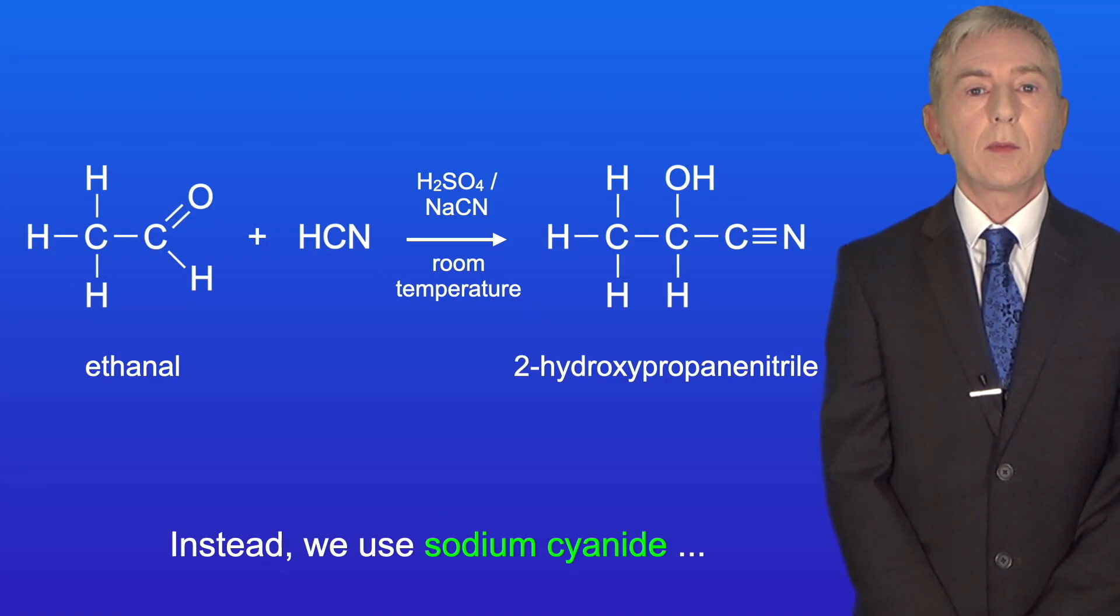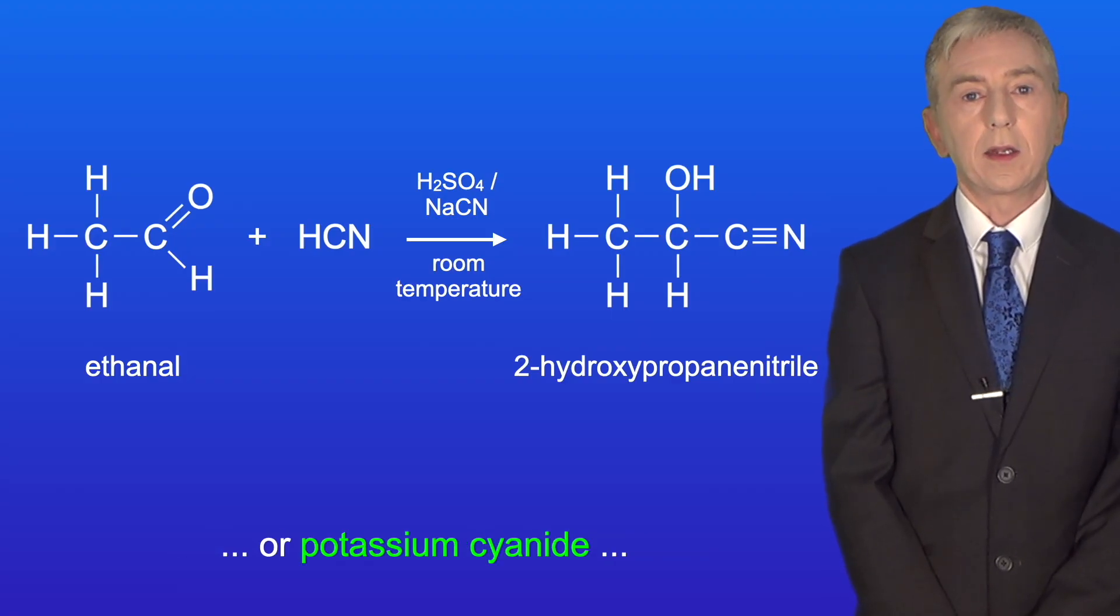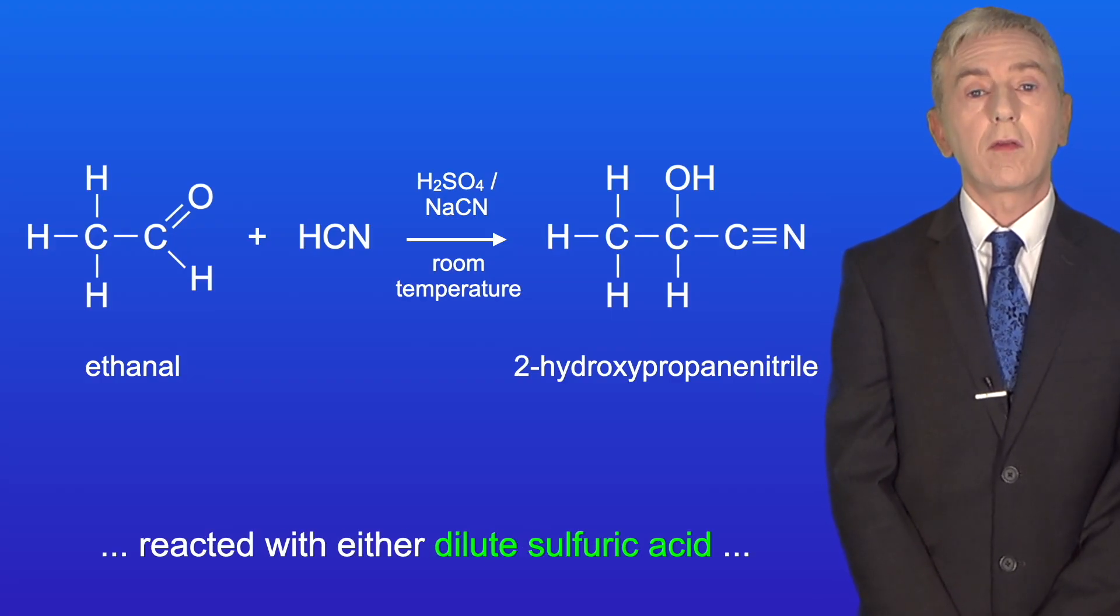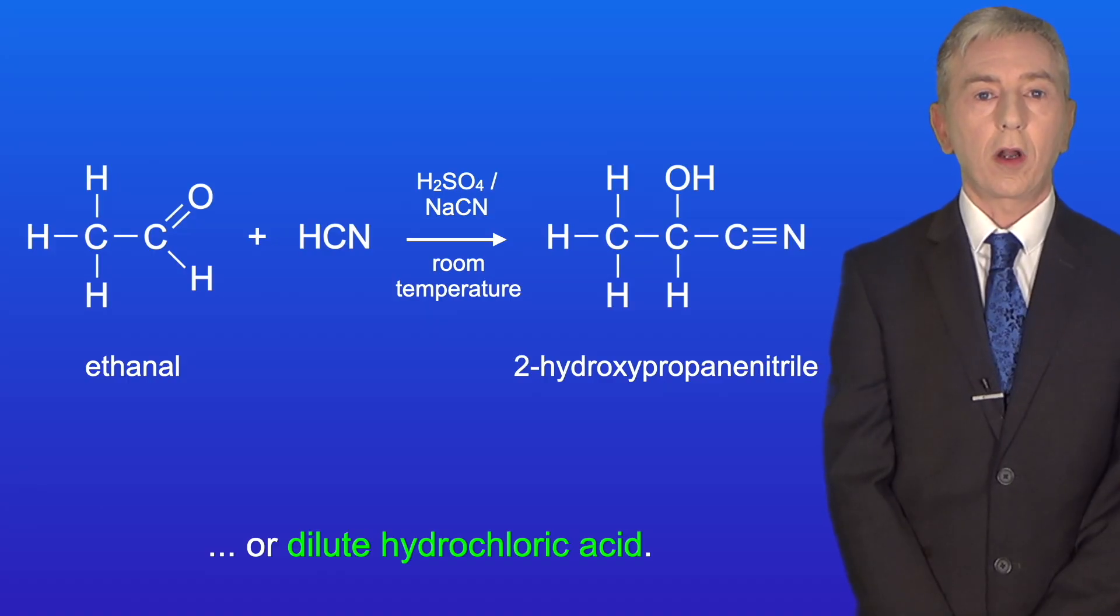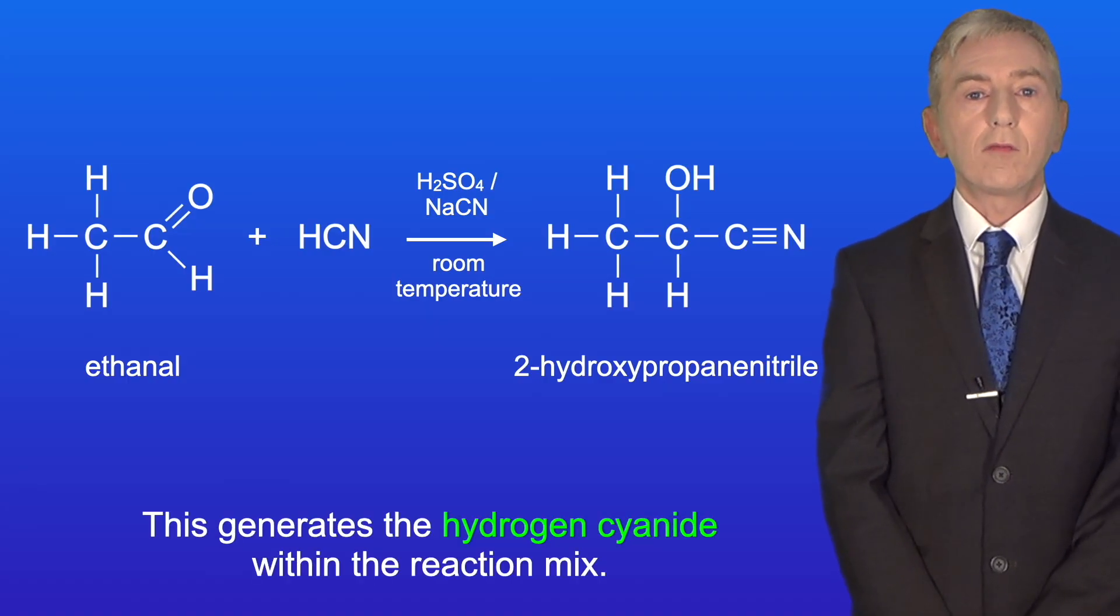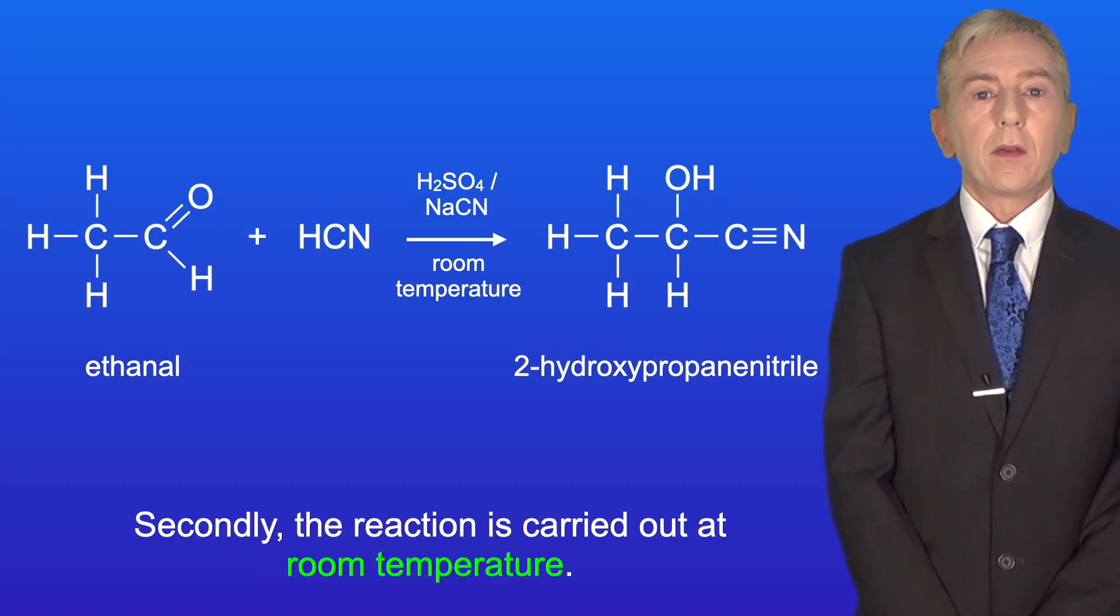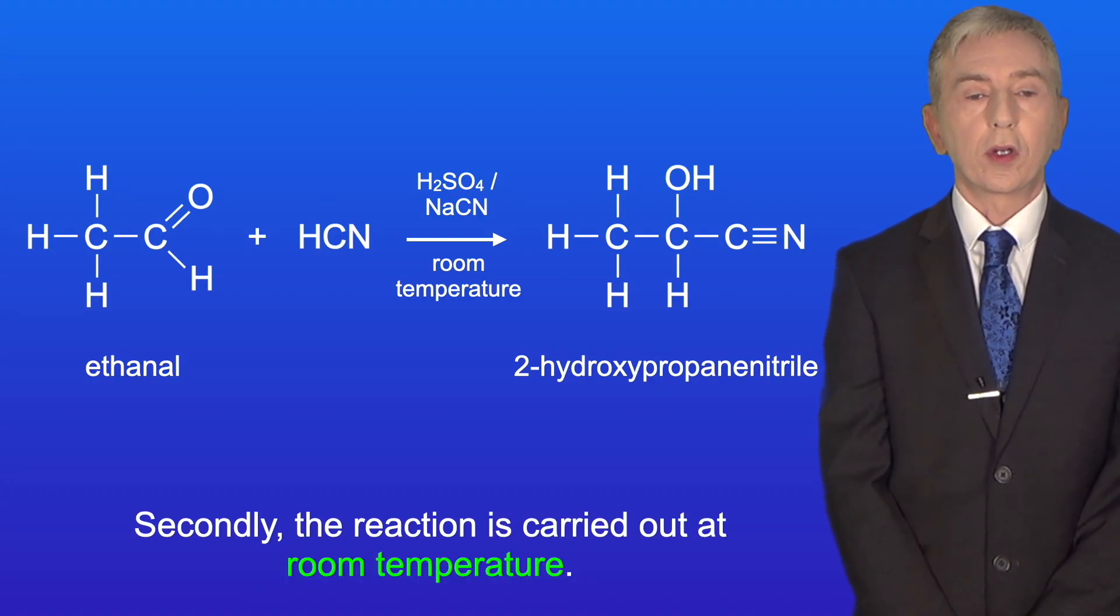Instead we use sodium cyanide or potassium cyanide reacted with either dilute sulfuric acid or dilute hydrochloric acid. This generates the hydrogen cyanide within the reaction mix. Secondly the reaction is carried out at room temperature.